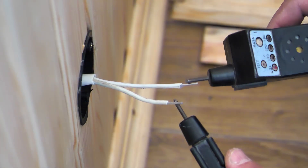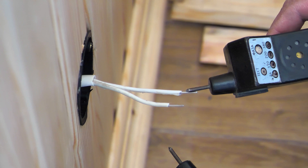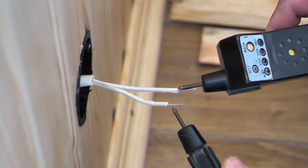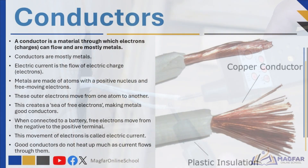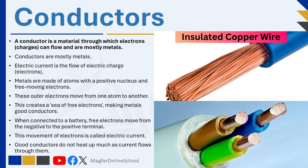Materials that allow electric charge to flow through them are called conductors, while those that do not allow the passage of electric charge are called insulators. A conductor is usually a metal and it allows electric current to flow easily. Electric current is simply the flow of electric charge; in metals, this is the movement of electrons.